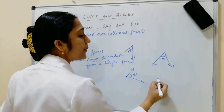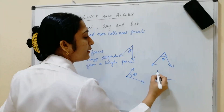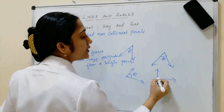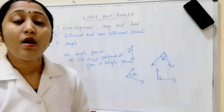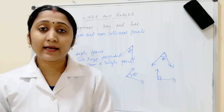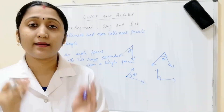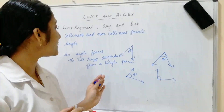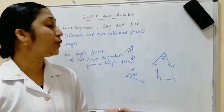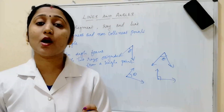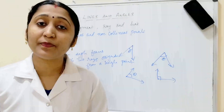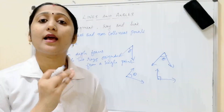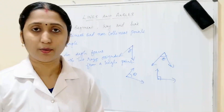Here is another example: this is a point, and from it another ray goes out, so this makes an angle. An angle is formed when two rays originate from a single point — that is what makes an angle.